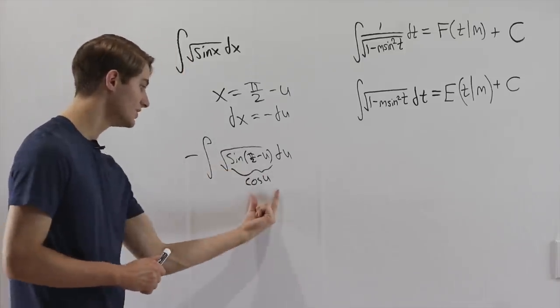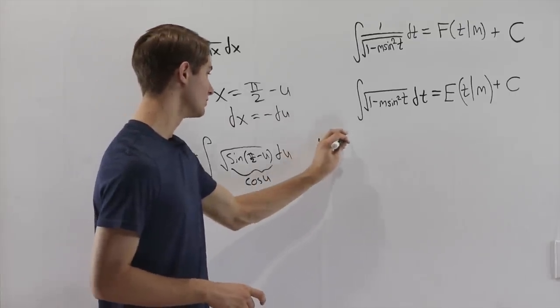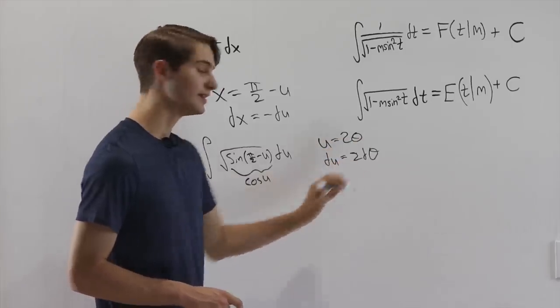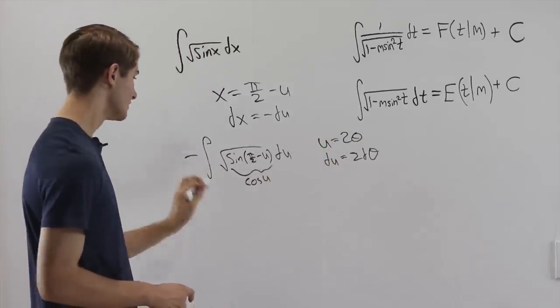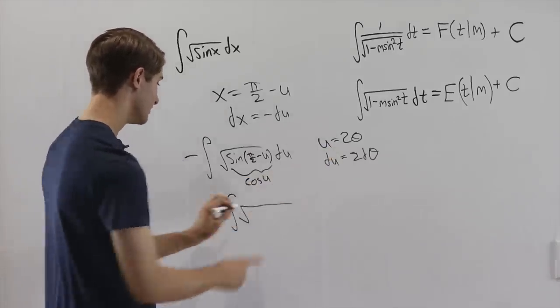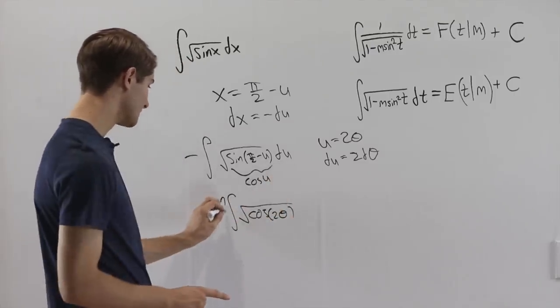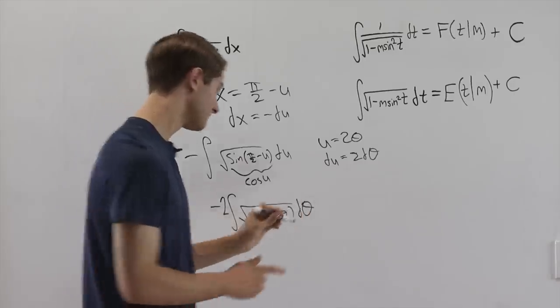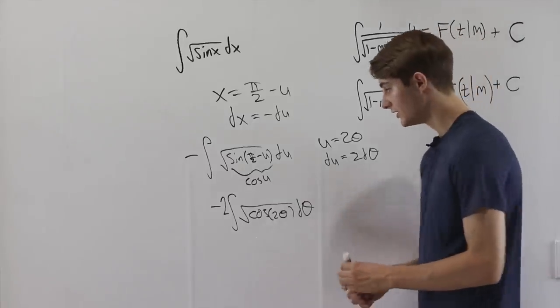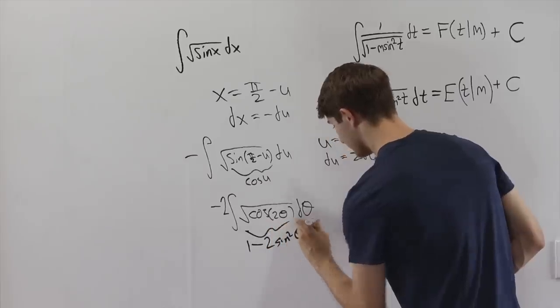Remember, our final goal is to turn this into cosine of 2 theta. Well, if we want to do that, we can just say let u equal 2 theta. Theta is our new variable. Then du equals 2 d theta, and we can plug all of this in. So our integral gets negative, the integral of the square root. We have cosine of 2 theta now on the inside. And then our du becomes, we'll bring the 2 to the outside, and then d theta. Now we notice that we have a cosine 2 theta on the inside like we want. So we can turn this cosine of 2 theta into 1 minus 2 sine squared of theta.